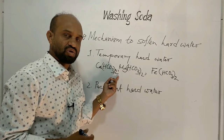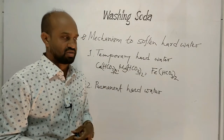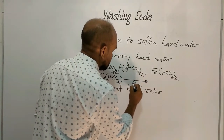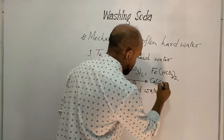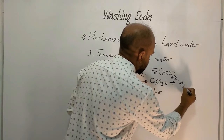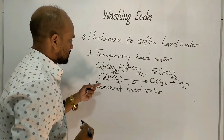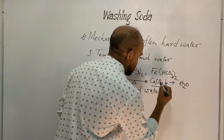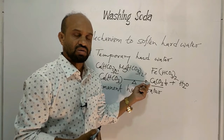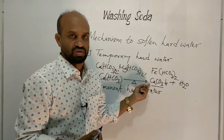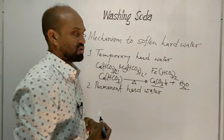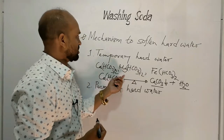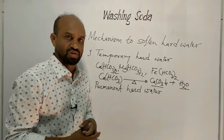This property is called temporary hardness because it can be removed simply by applying heat. For example, when calcium bicarbonate is heated, insoluble calcium carbonate and water are formed. The calcium carbonate deposits as a precipitate and the water becomes soft. That is why this hardness is called temporary hardness.